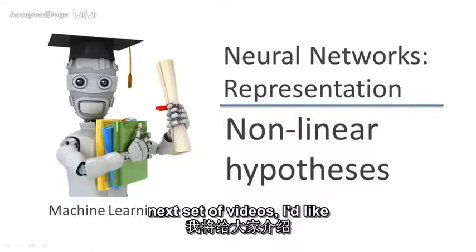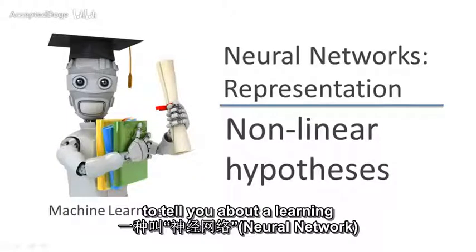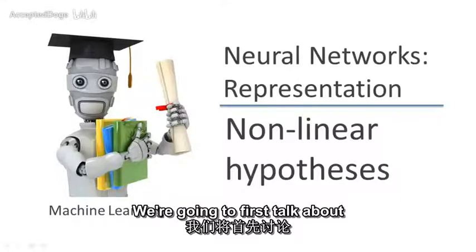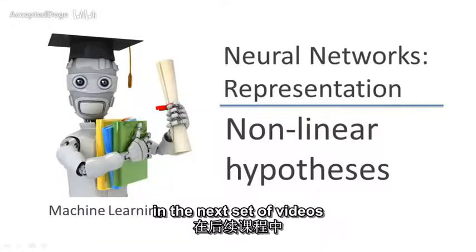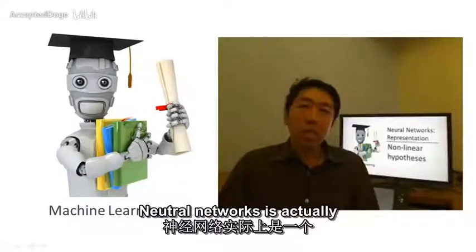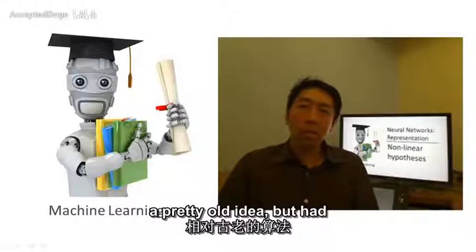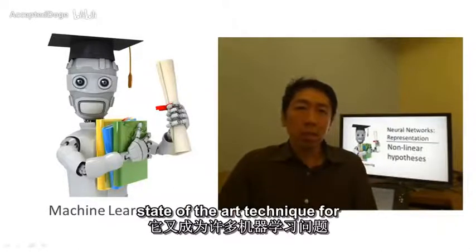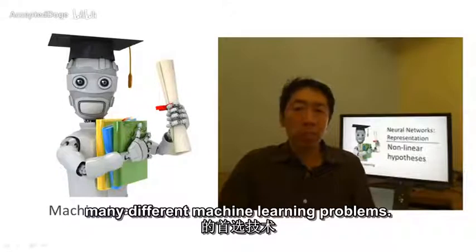In this and the next set of videos, I'd like to tell you about a learning algorithm called a neural network. We're going to first talk about the representation and then in the next set of videos talk about learning algorithms for it. Neural networks is actually a pretty old idea but had fallen out of favor for a while. But today it is the state-of-the-art technique for many different machine learning problems.